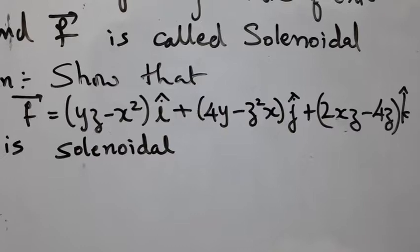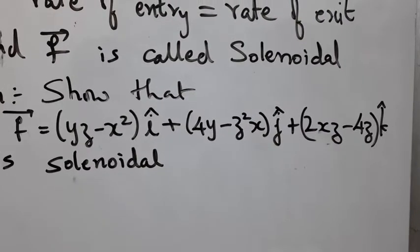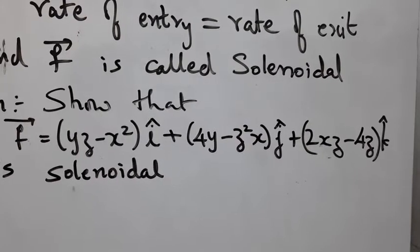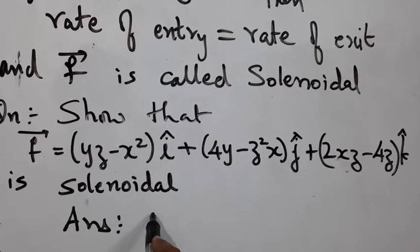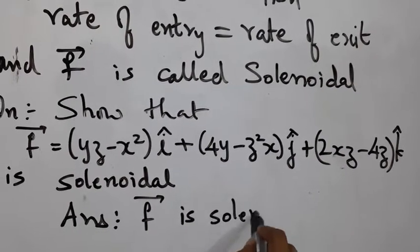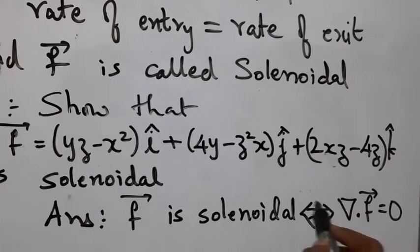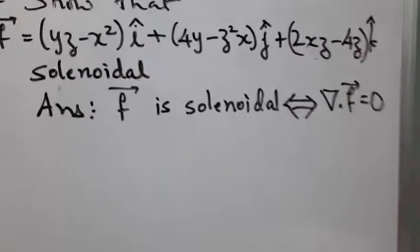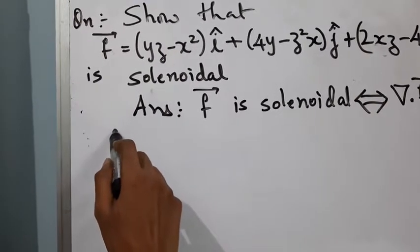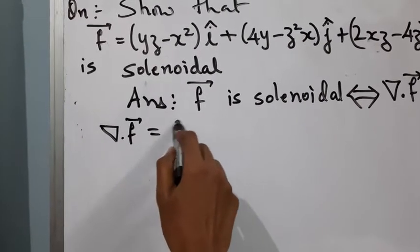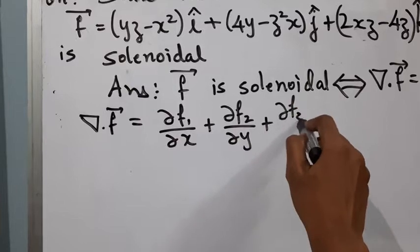Now the next example: show that vector f given by yz minus x squared i cap plus 4y minus z squared j cap plus 2xz minus 4z k cap is solenoidal. f is solenoidal implies divergence of f equal to 0. So the first step is to find divergence of f, which by definition is dou f1 by dou x plus dou f2 by dou y plus dou f3 by dou z.